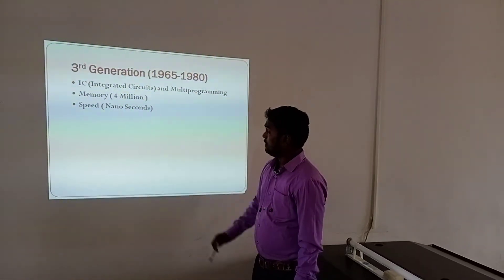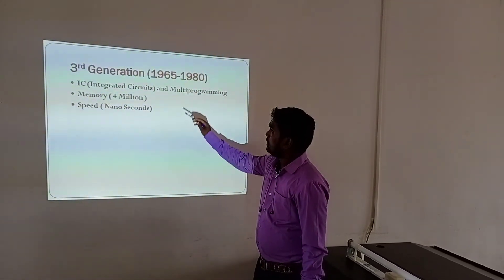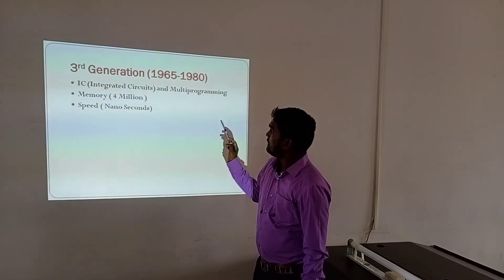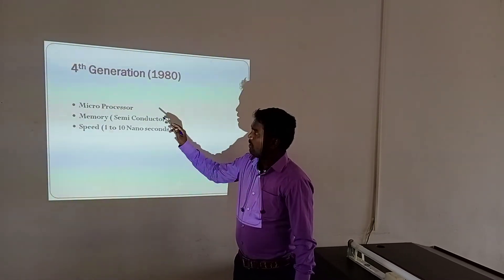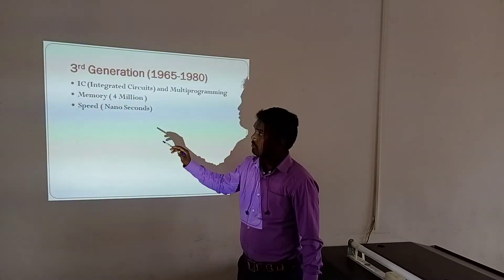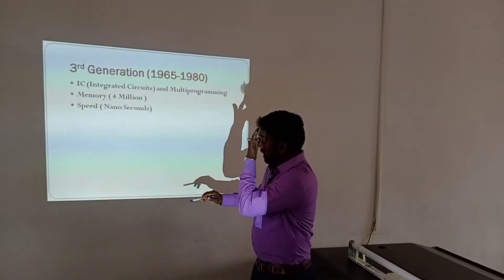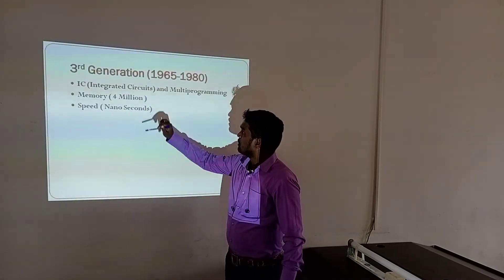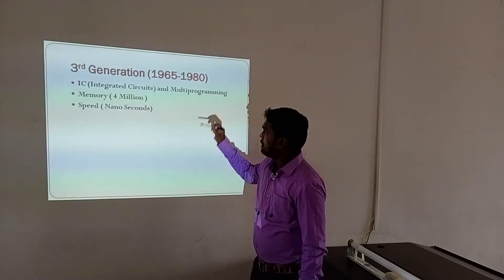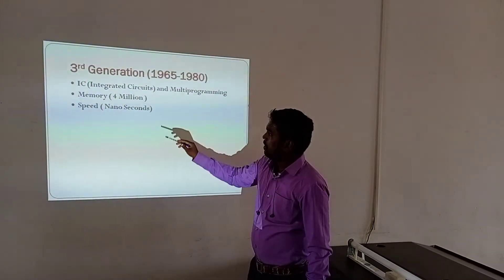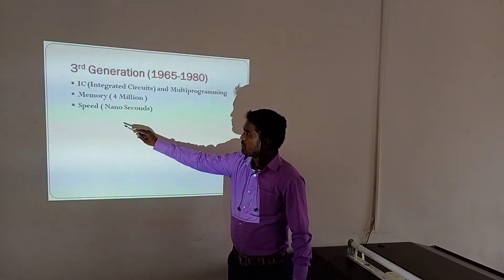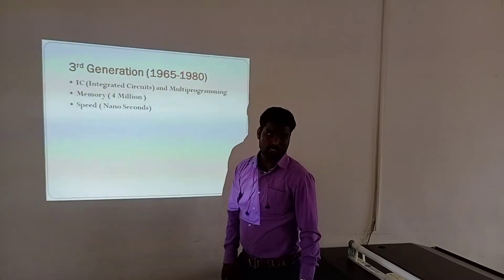Third Generation, 1965 to 1980. Integrated Circuits (IC) and multiprogramming were introduced. Memory was 4,000,000 characters and speed was around 40 nanoseconds.